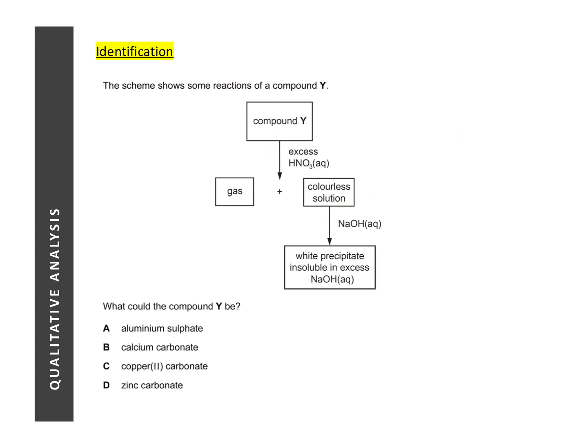For QA, sometimes you will be given flow charts like this, which showcases a series of tests or series of reactions and then we are supposed to identify the unknowns. So for this question, we are given a compound Y reacting with acid to give a gas and a colorless solution. Now, since it is a compound reacting with an acid producing a gas, immediately we know that it must be carbon dioxide and the compound must be carbonate. The other substance that will react with an acid to produce a gas is a metal and metals are elements and not compounds. So from there, we know that it must be carbonate.